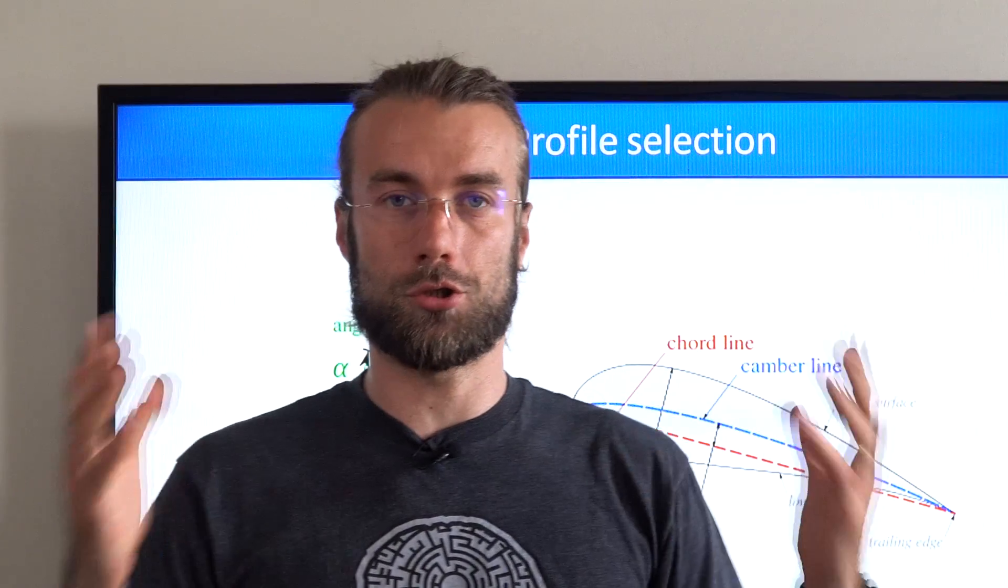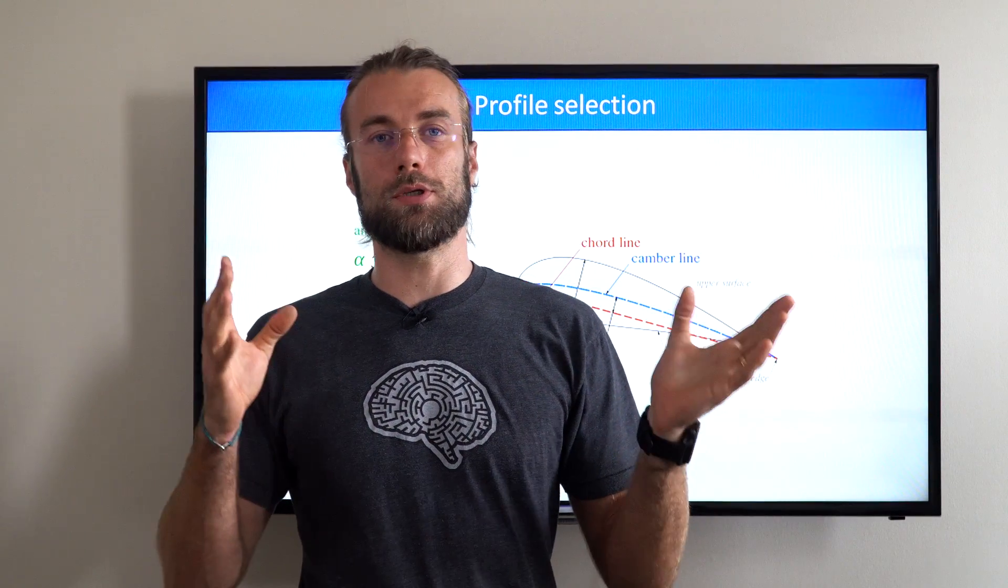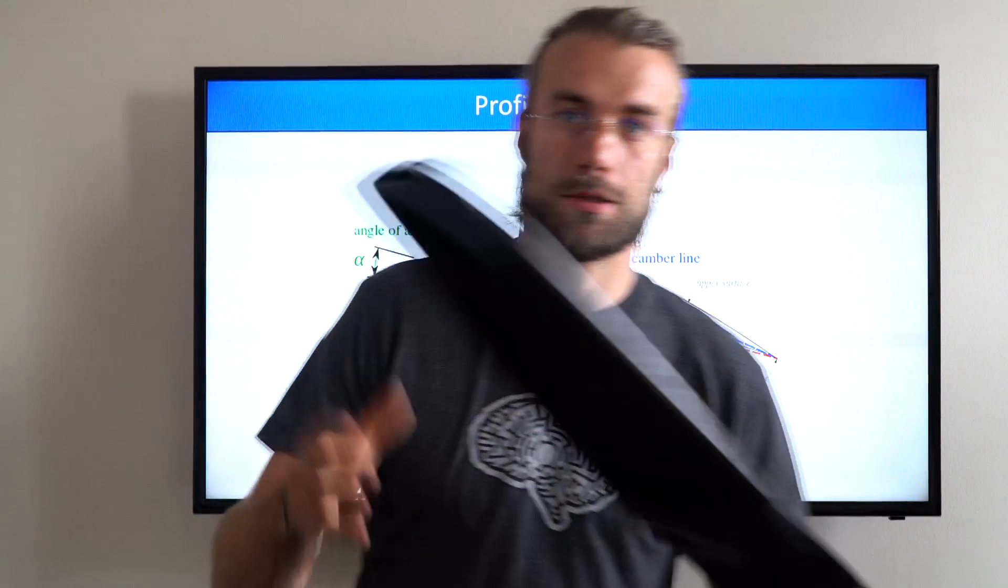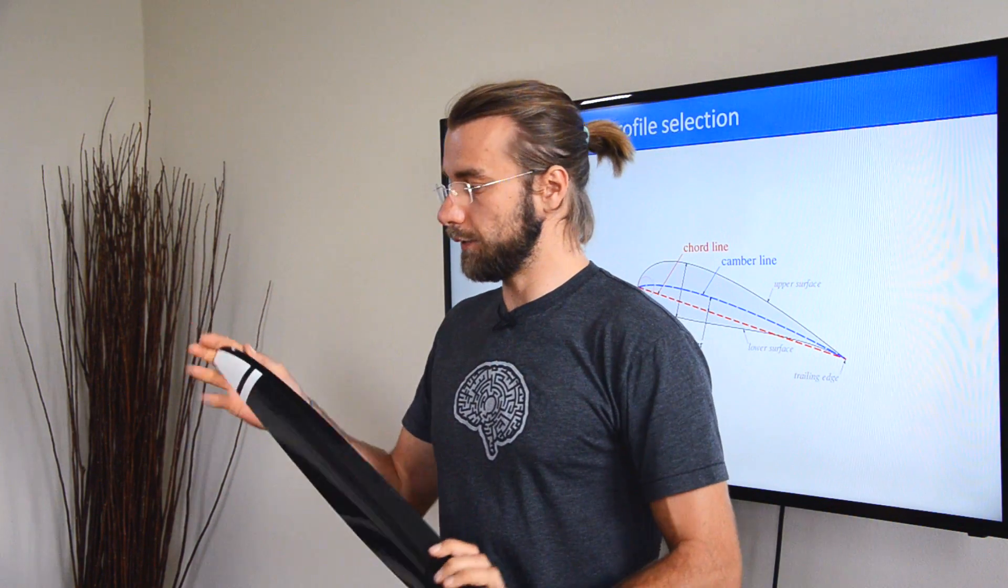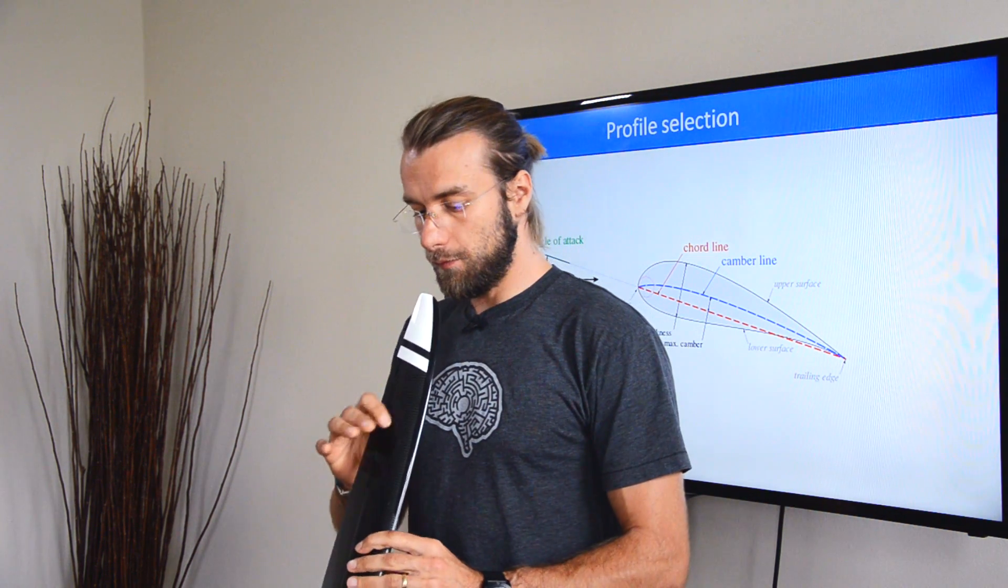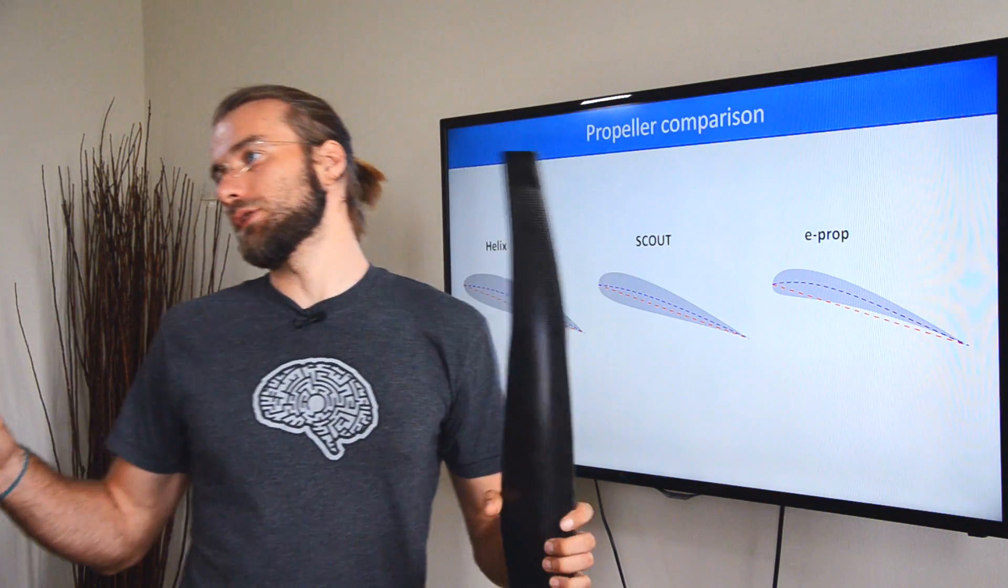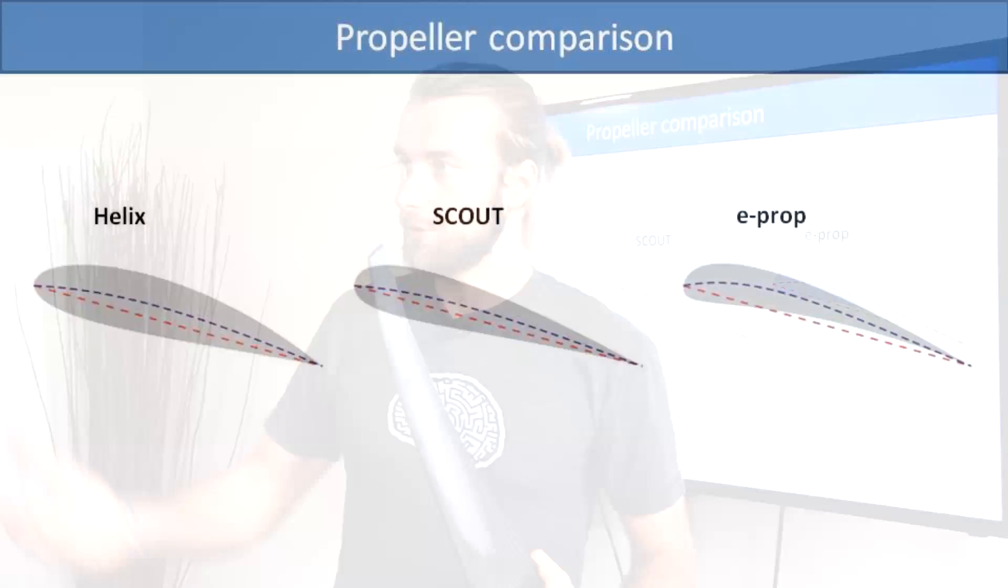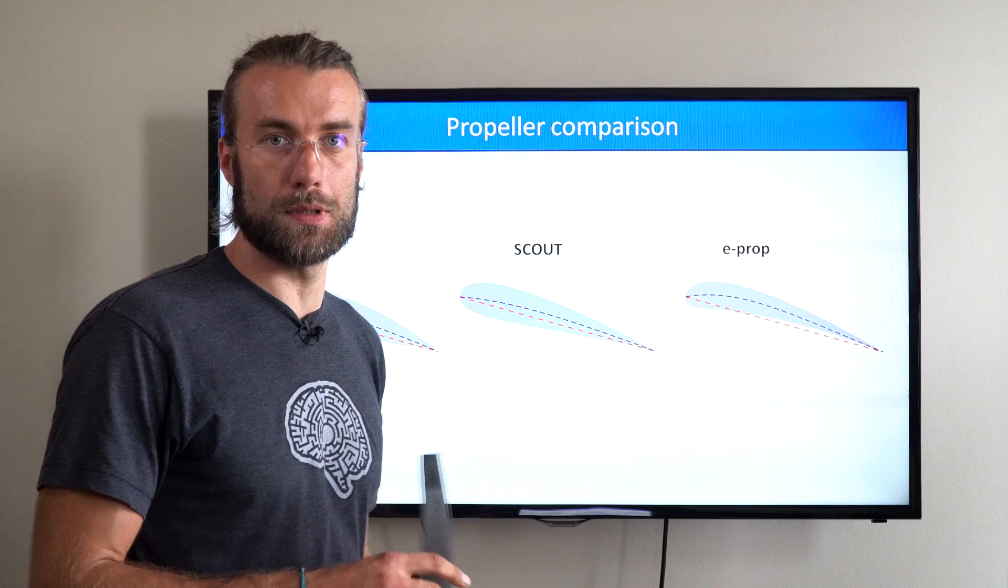So the next consideration is the choice of the profile. Different designers and manufacturers choose a different profile. Here I have three examples of propellers that we use the most for Vittorazi engines. The first is the Helix prop, which is sort of a rather beefy profile. Second is the Scout propeller that we use the 132 cm long. Profile is somewhat similar to Helix, but still, the thickness of the profile is lower. Last one is the E-prop with a totally different profile, very thin profile, and I want to explain in the next slide.